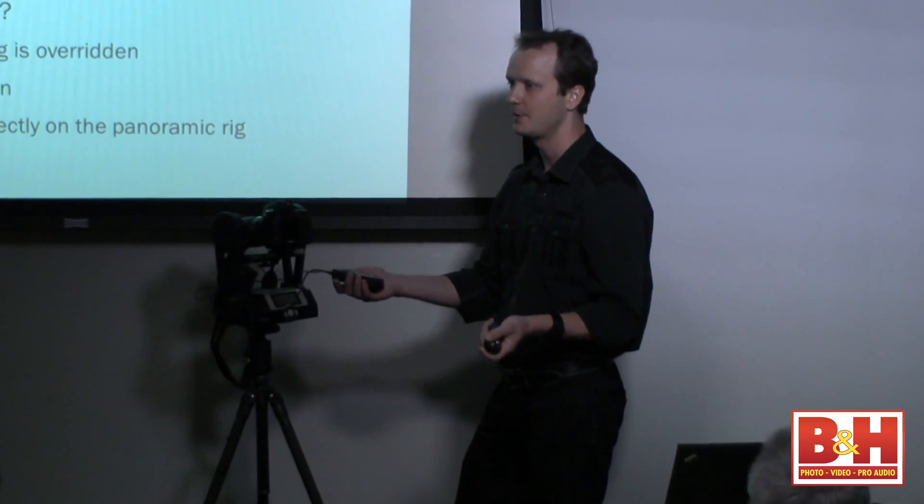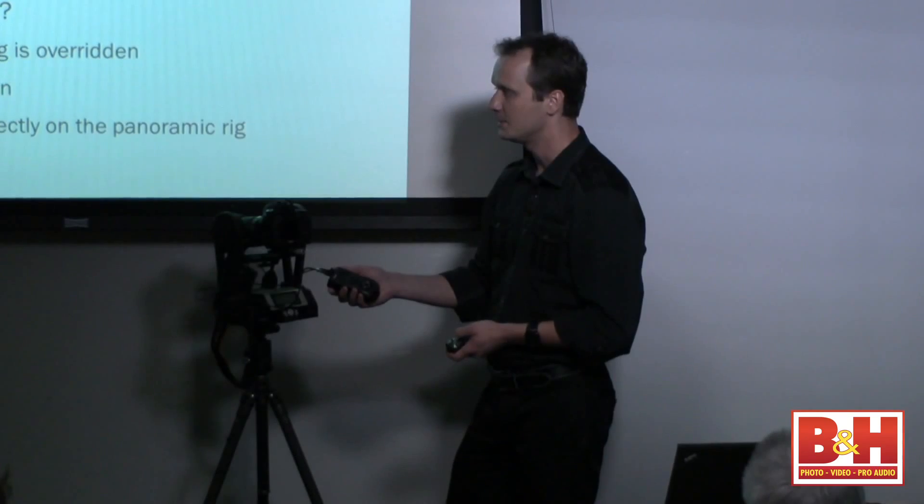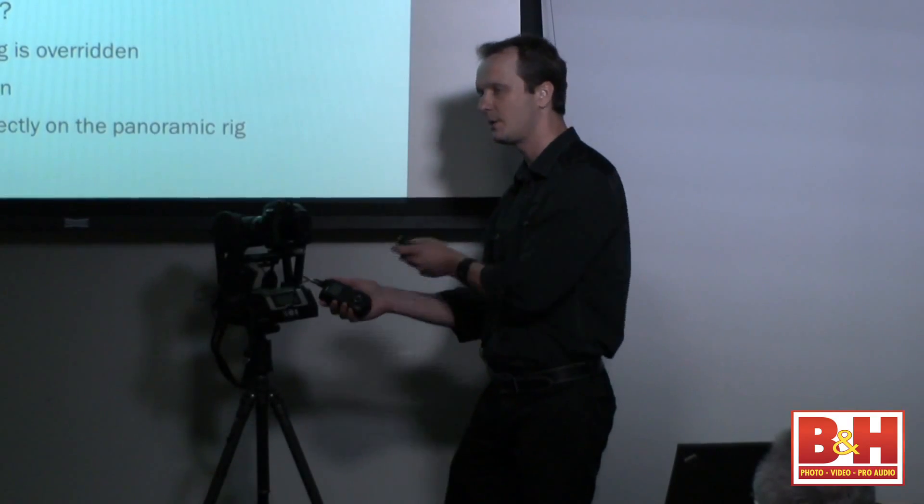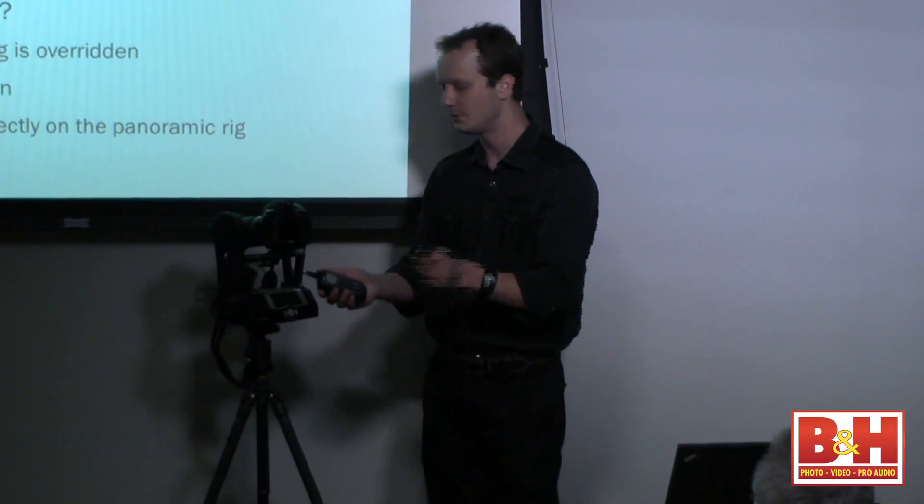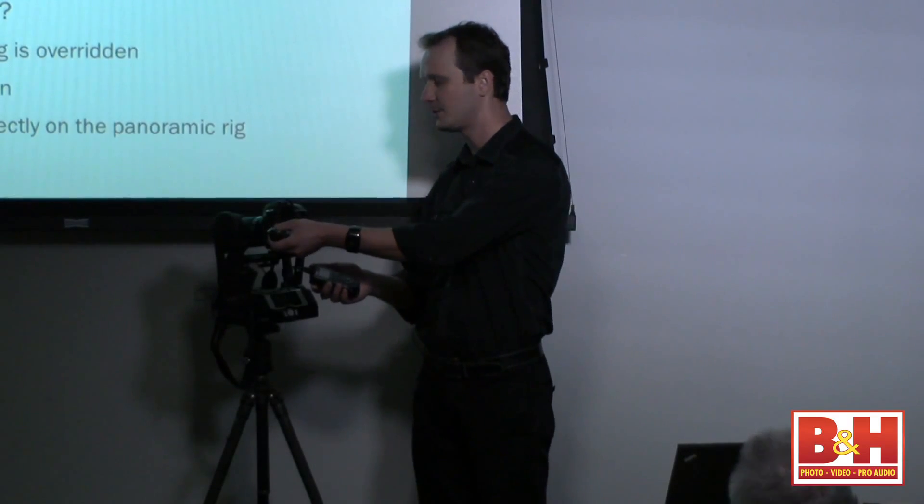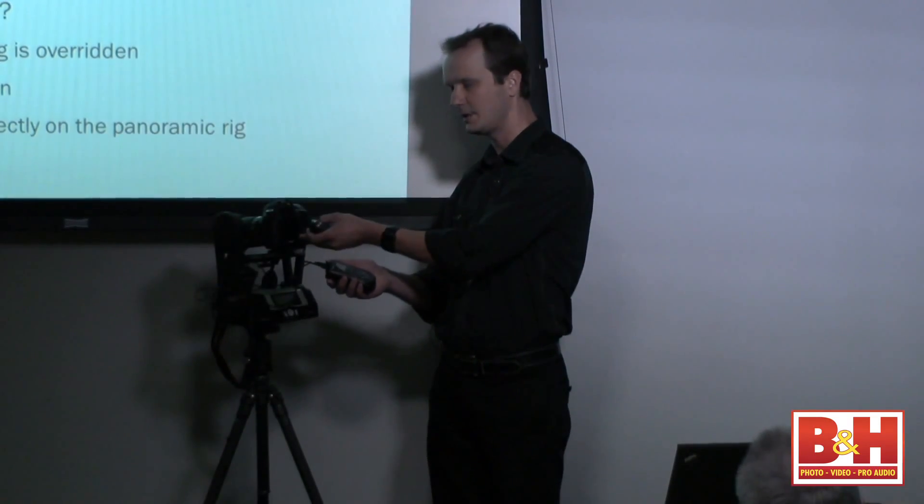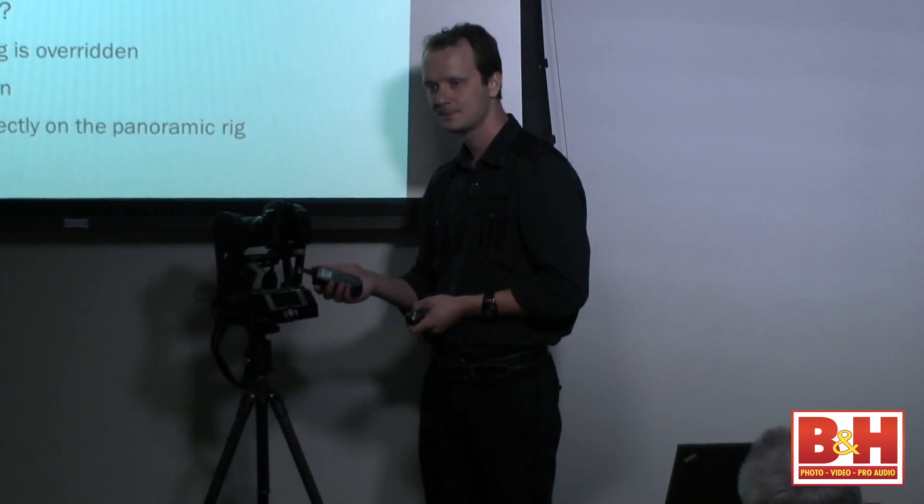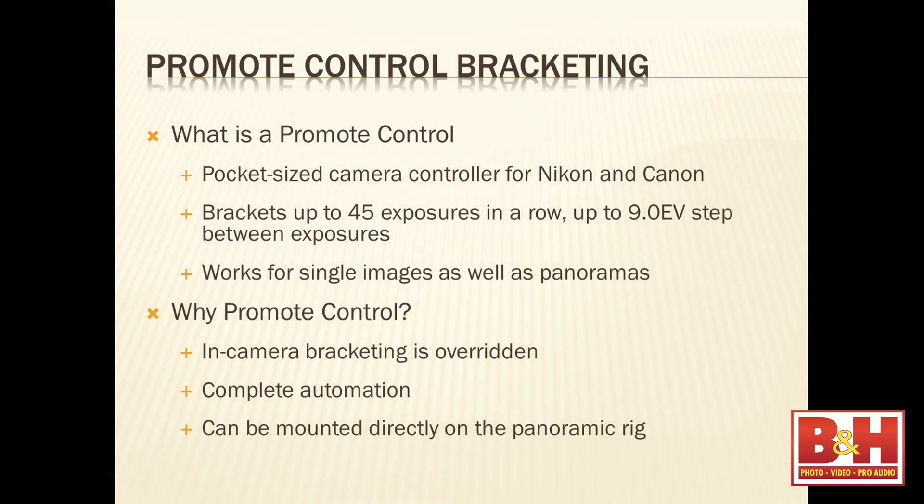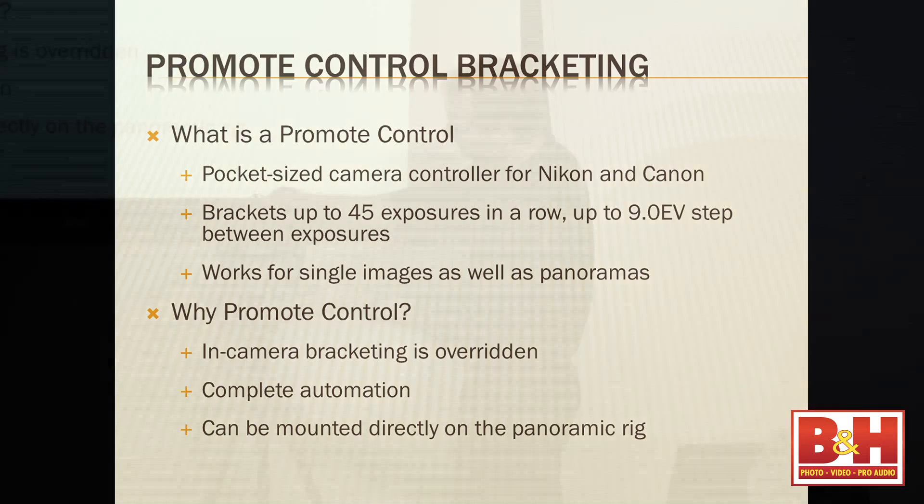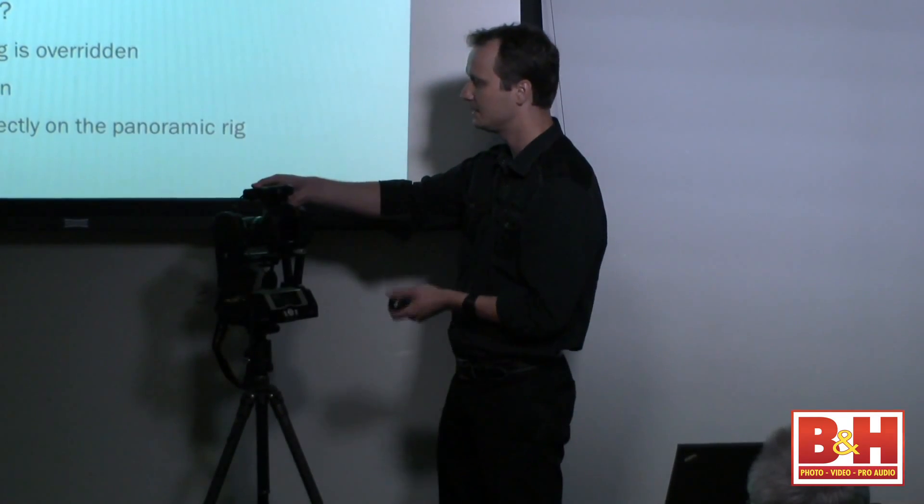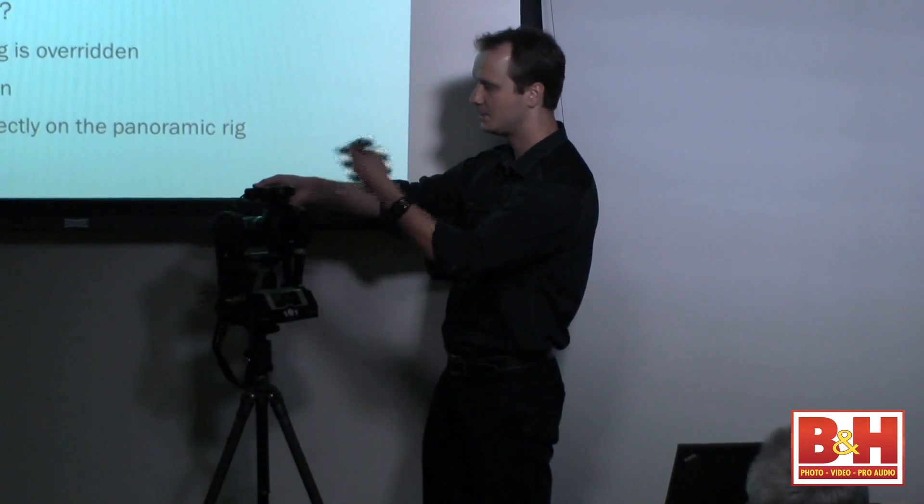So why use Promote Control instead of bracketing? Obviously it's much more powerful than bracketing. It's completely automated, always does repeatable work. If you move your camera five feet away, you press the same button pre-programmed, you're going to have the same bracket every time, with any camera. You unplug this from Canon 5D Mark III, plug it into Canon Rebel, you're going to have the same bracket. Plug it into a Nikon, same bracket. And it can be mounted directly on the panoramic rig or put into the hot shoe.